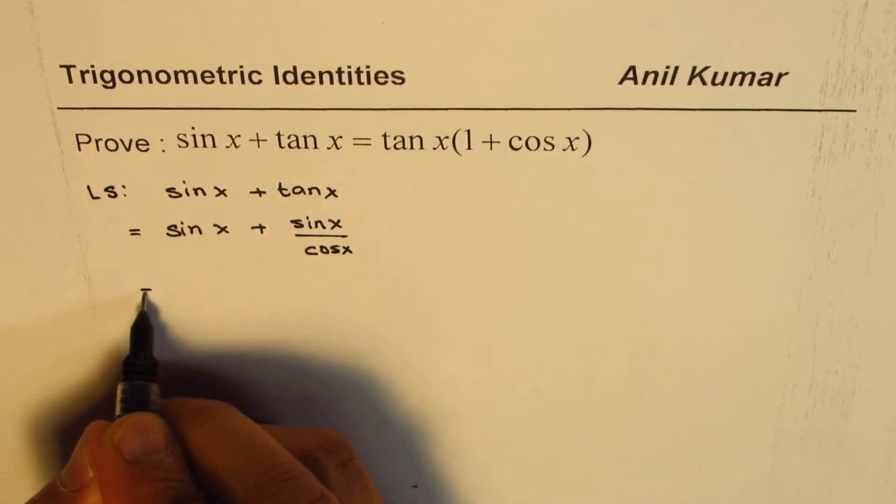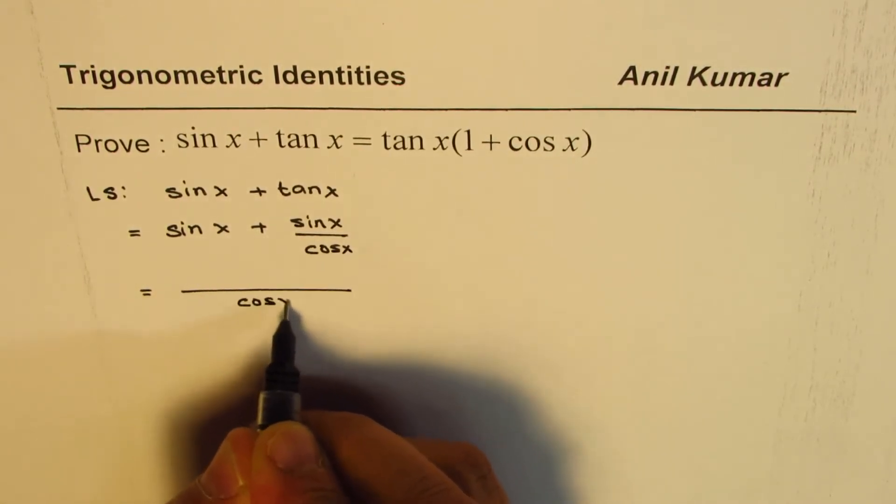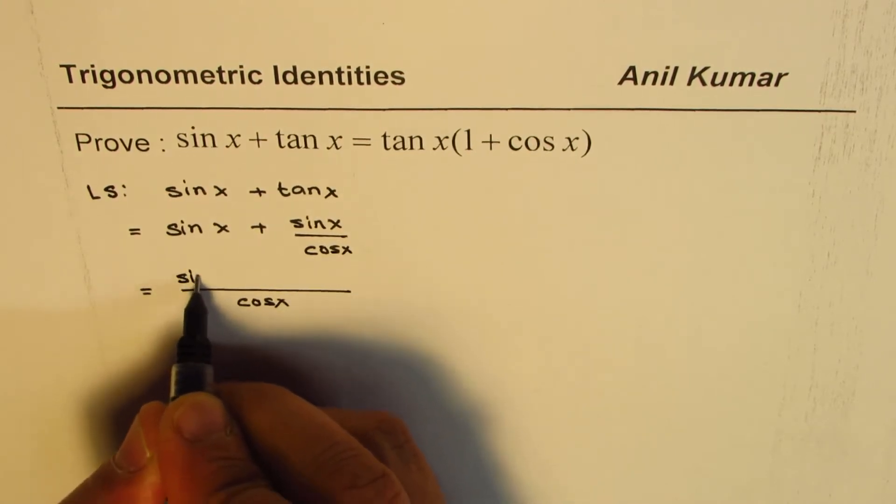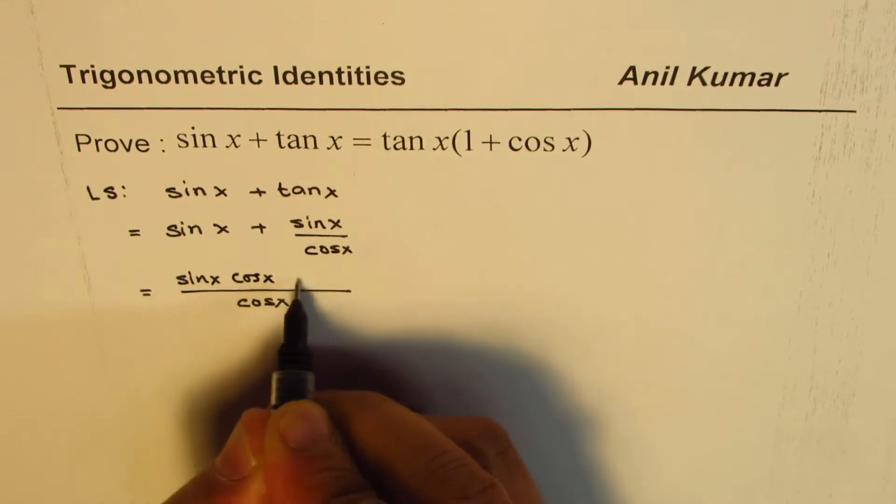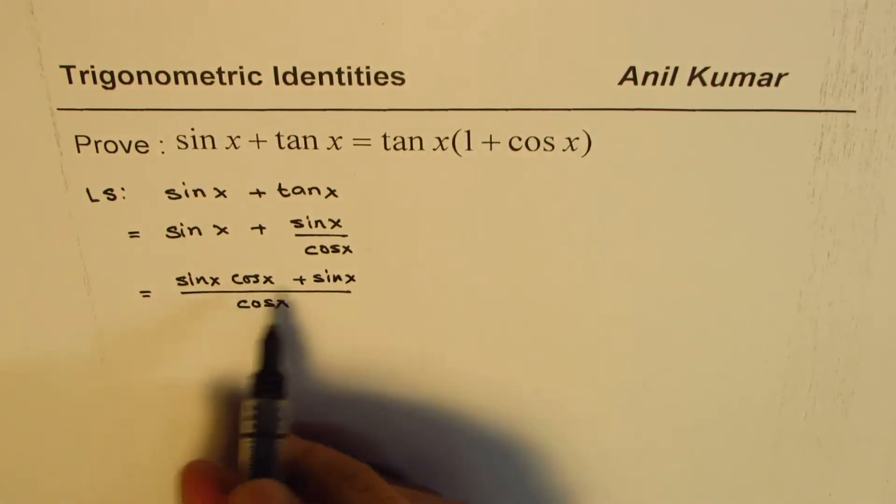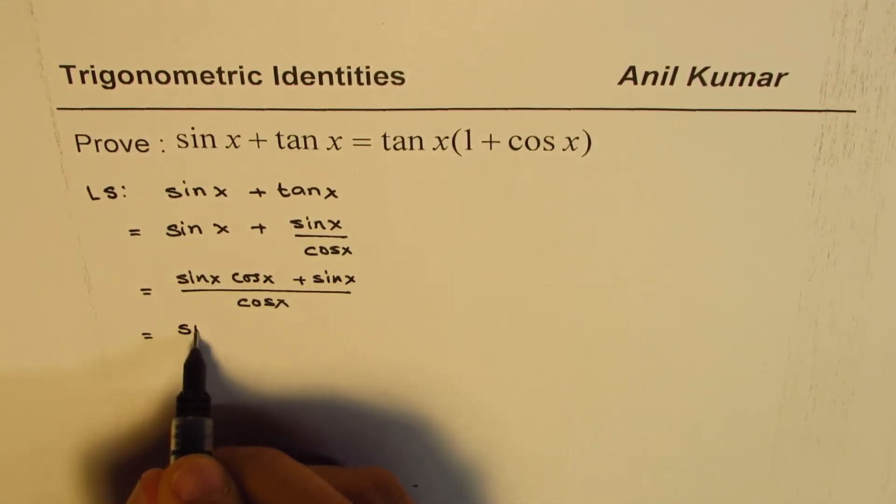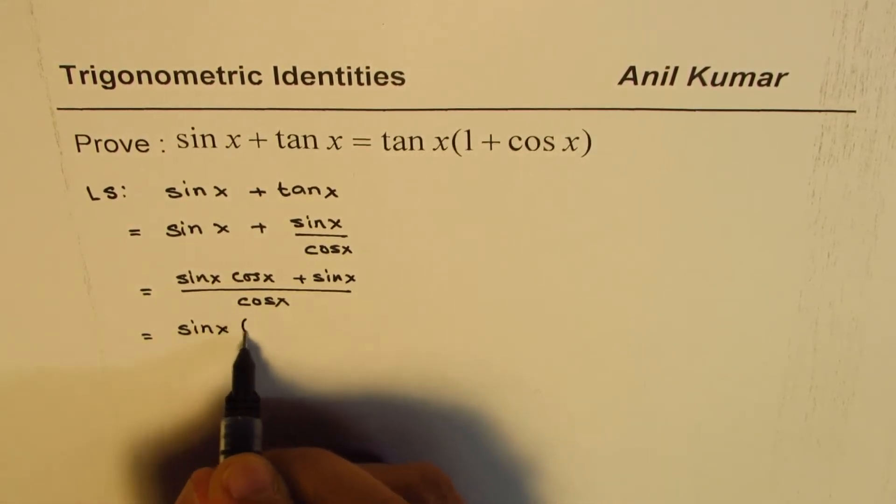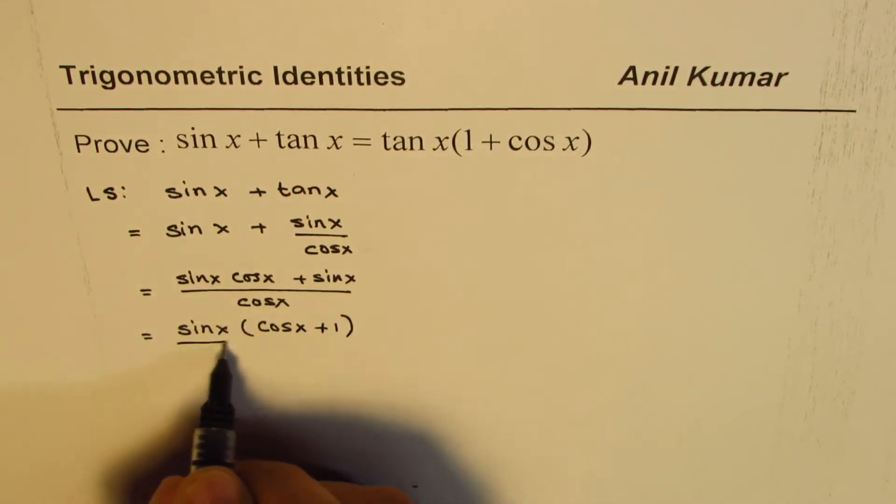Now we can take common denominator, cos x. And we get sin x cos x plus sin x. Now in the numerator, sin x is common. So I could write this as sin x and we have cos x plus 1 divided by cos x.